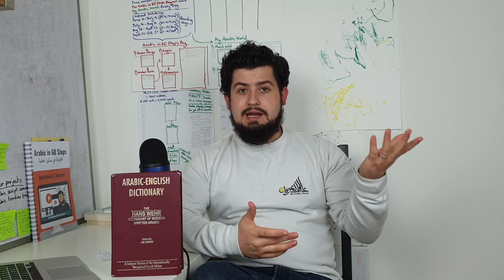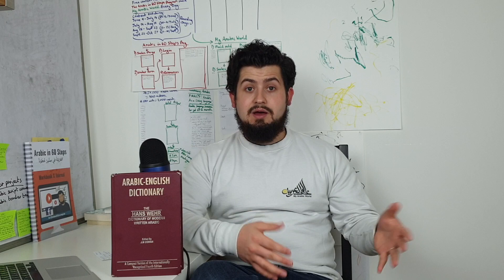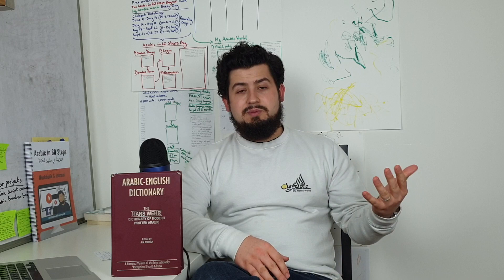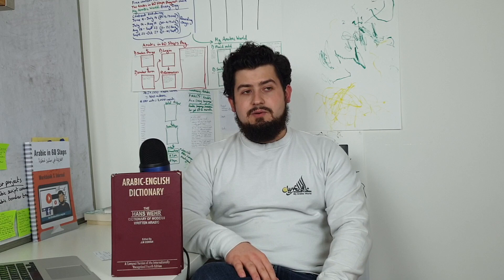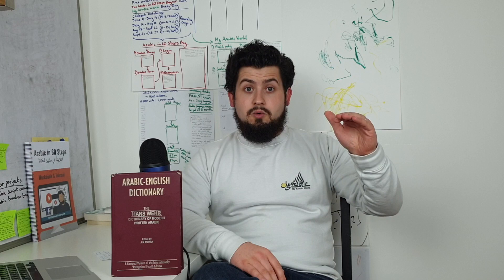Form II is Sallama, Form III is Salama, Form IV is Aslama, Form V is Tasallama, Form VI is Tasalama, Form VII is Intalama, Form VIII is Istaslama. Form IX doesn't exist for that verb, and Form X is Taslama, which does exist. So that's how it would be organized — with Roman numerals for each form. People who study Arabic in a more classical or Islamic sense, or in the Arab world, probably wouldn't learn it that way — they just learn the patterns.